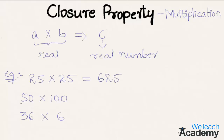Then 50 multiplied by 100 gives 5000, which is also a real number. And 36 multiplied by 6 gives 216, which is also a real number. Hence, closure property on multiplication is a closed operation.